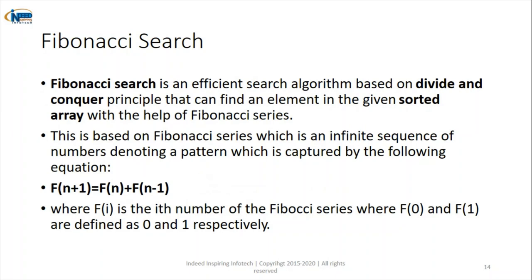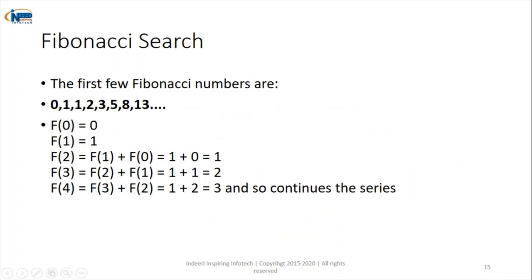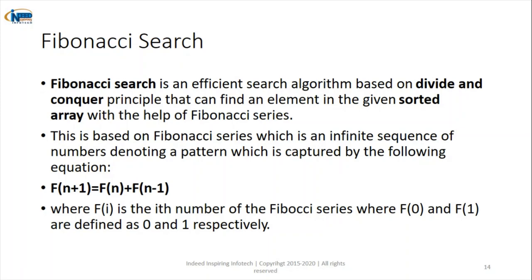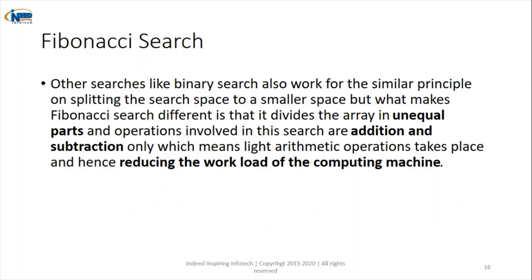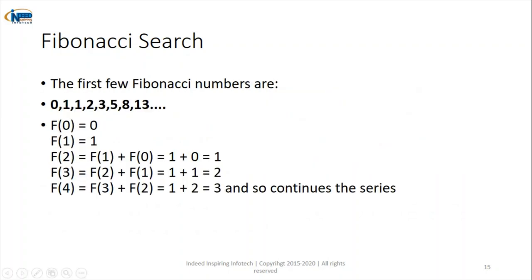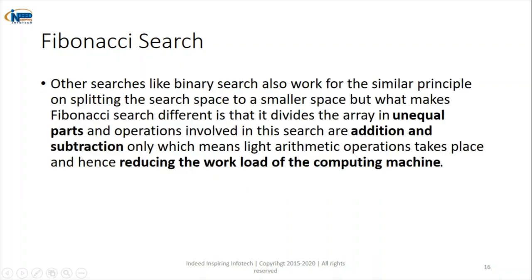The seventh algorithm is Fibonacci search. Fibonacci is a series: 0, 1, 1, 2, 3, 5 — each element is the sum of the last two. Fibonacci search is a divide-and-conquer algorithm, but unlike binary search where the divisions are two equal halves, the divisions in Fibonacci search are unequal, based on Fibonacci numbers.